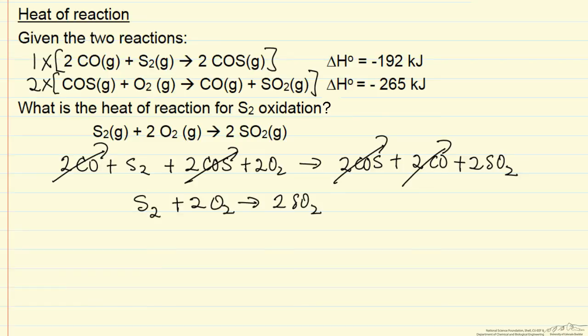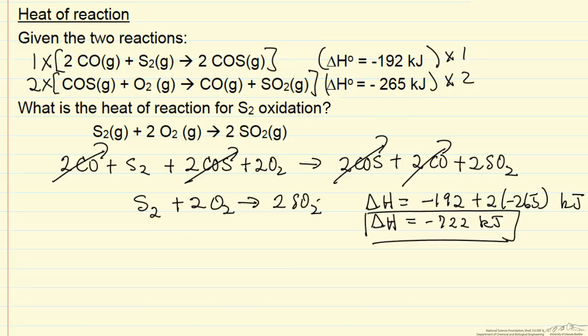And so this means we could take this heat of reaction times 1, this heat of reaction times 2, and add them together to get the overall heat of reaction. So the overall heat of reaction is minus 192 plus 2 times minus 265 kilojoules. So the overall heat of reaction for this reaction then is minus 722 kilojoules.